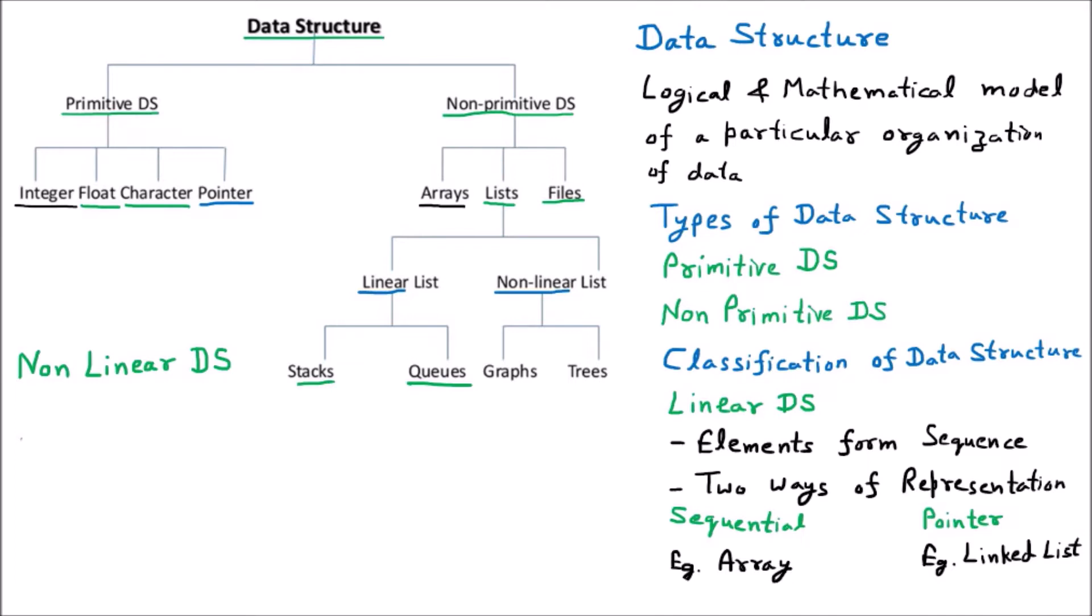Now we are having the nonlinear data structure, and in the nonlinear data structure we should know one thing. The elements are not into the sequence. There is no compulsion that they should be into sequence. They can be in any form. So here we can say that elements not form sequence, means it is not required that they should be following some sequence.